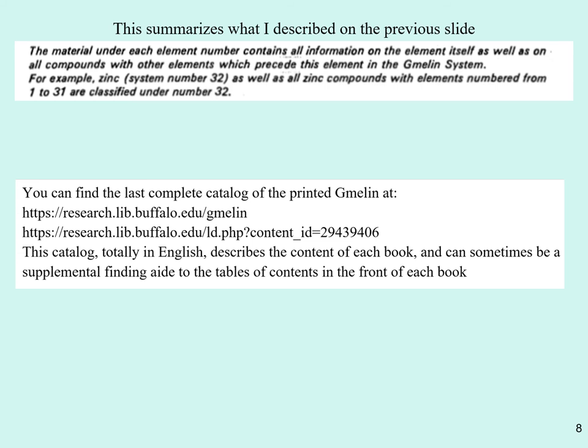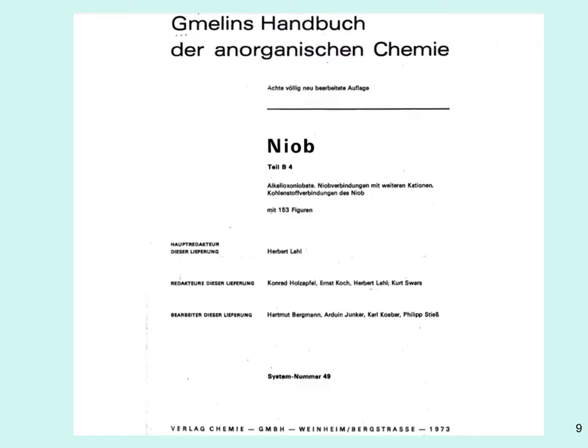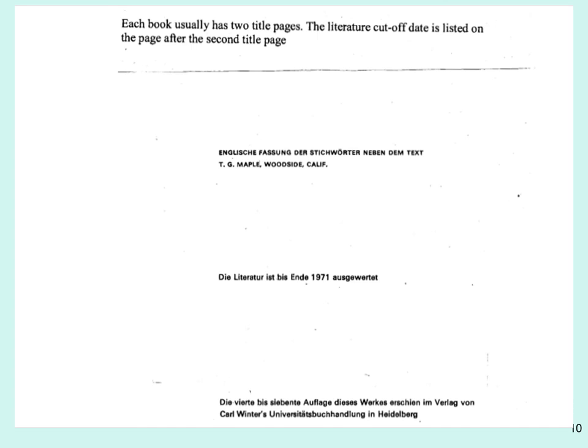The top of this slide describes what I covered on the previous slide. In the middle, there are some useful websites that help guide you to which volumes of Gmelin will be useful. I pulled a book randomly from the shelf at City College and looked at the title page — it's on niobium, with its system number and designation 'Teil B4.' You would write that down to identify it if you wanted to return to that book.